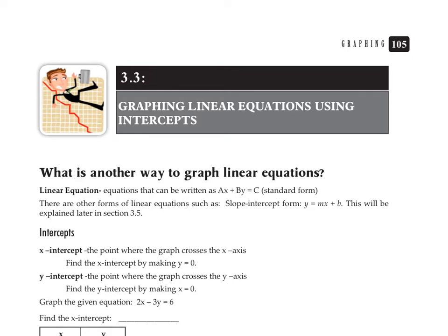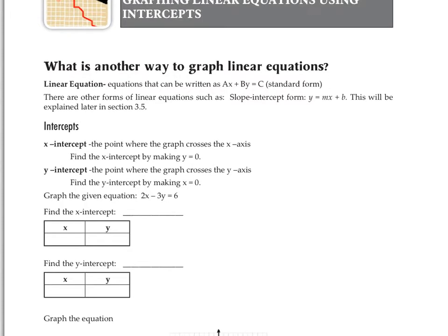The intercepts are the points at which a line crosses the x and y axis. The x-intercept is the point where the graph crosses the x-axis. The y-intercept is the point where the graph crosses the y-axis. To find each of these points, you make one of the corresponding coordinates 0. If you're looking for the x-intercept, you make y = 0. If you need to find the y-intercept, you make x = 0. That gives you two points which you can connect to make a line.